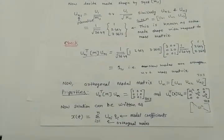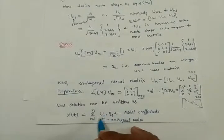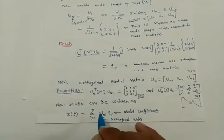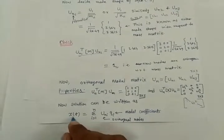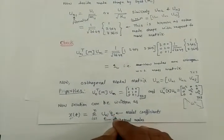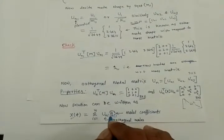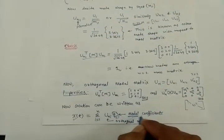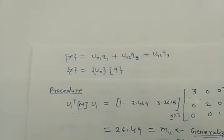Now the solution can be written as x(t) equal to the sum from i=1 to n of the products, where n is the degrees of freedom. For a 3-DOF system this becomes un1*q1 + un2*q2 + un3*q3. Here x is the displacement of the masses, and I am replacing x1, x2, x3 with new coordinates q1, q2, q3, which are known as modal coordinates.